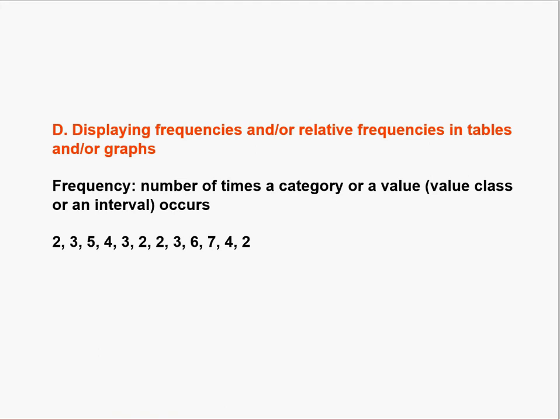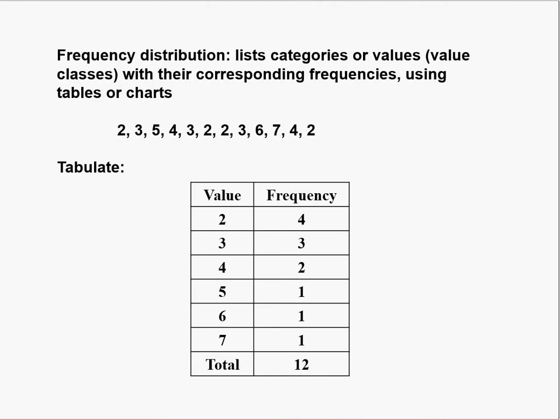We can display frequencies and relative frequencies in tables or graphs. This is a data set we can use to show how to tabulate data and express it in graphs. We first count the number of times each value occurs to generate a table of frequency distribution. For example, two occurs four times and three occurs three times — these counts are called frequencies.